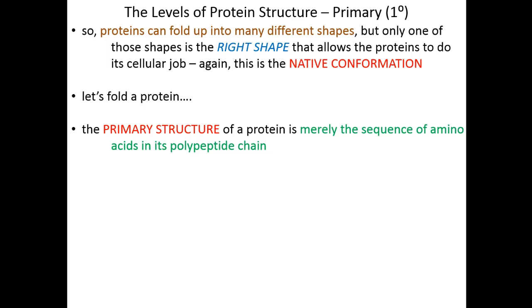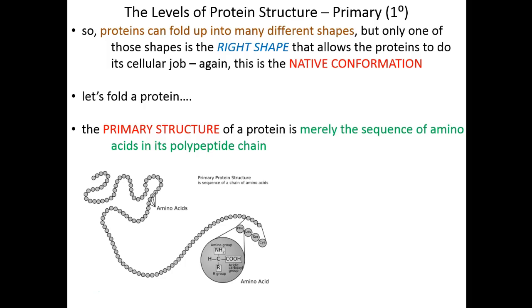The very first level of protein structure is primary structure, and you already know it — we've already covered it, we just haven't named it. Primary structure is just the chain of amino acids; it's the sequence of amino acids in the polypeptide chain. Every protein has its very first amino acid — that's the amino or N-terminal end. Those amino acids are linked together one by one through peptide bonds, creating a long chain. Each circle is an amino acid, until all the way at the end you have a phenylalanine, a leucine, a serine, and the cysteine at the carboxy or C-terminal end of the chain.